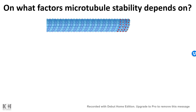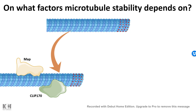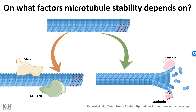Microtubule stability depends on several additional factors. There are microtubule-associated proteins, or MAPs, which attach to the microtubule, and tau proteins — which are significant in Alzheimer's disease — that all affect microtubule dynamics and help in microtubule stability. But there are also certain proteins like katanin and stathmin which help to sever the microtubule from the end and break it down. So both stabilizing and destabilizing factors are present in the cell.